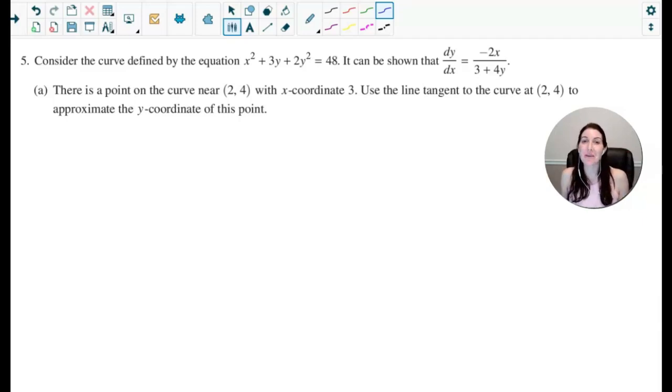Hi everyone, here is question number 5 from the AP Calculus AB exam in 2024. Make sure to check out the description below where I provided a link to College Board where you can see this FRQ along with all of the others. So let's get to it. In question number 5, it says to consider the curve defined by the equation x squared plus 3y plus 2y squared equals 48, and it can be shown that dy dx is equal to negative 2x over 3 plus 4y.